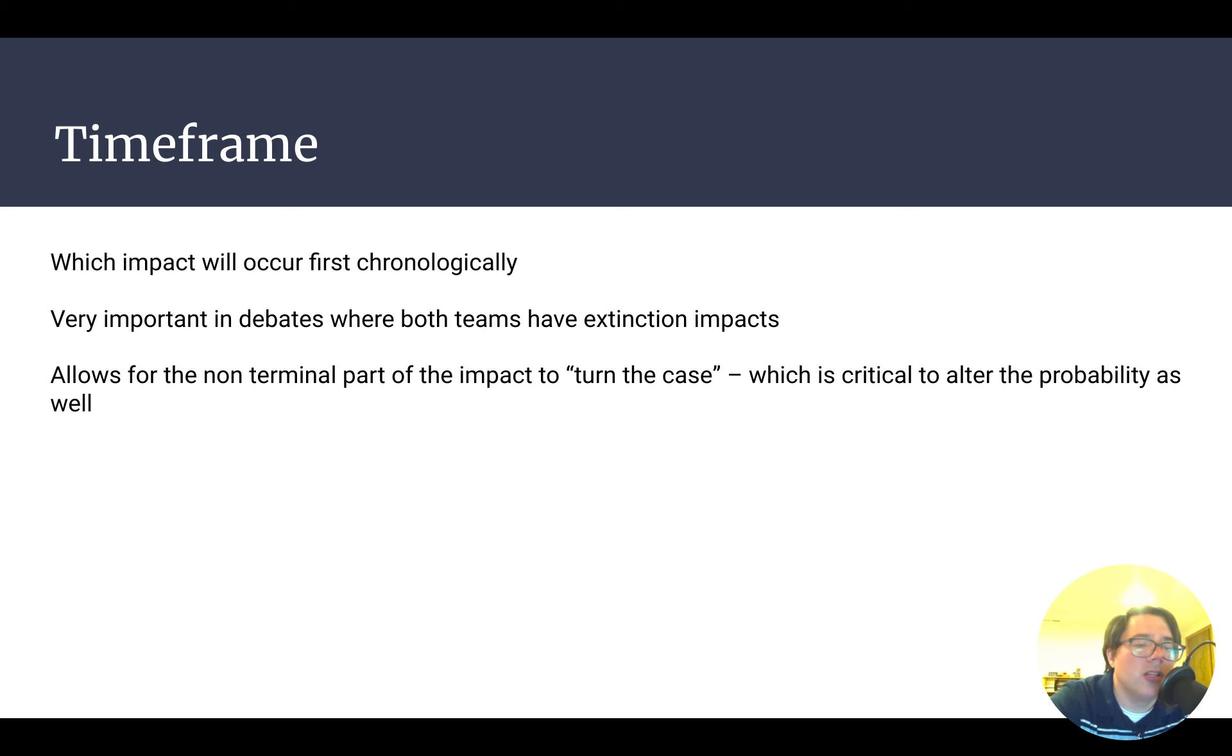Timeframe is the second big argument that occurs inside of impact calculus. Timeframe asks the question, which occurs first chronologically? I believe that it is one of the most important things that goes underutilized in extinction versus extinction debates. If one team is claiming to have an extinction impact based upon climate change, and another team is arguing an extinction-level impact from a U.S.-China war over Taiwan, you would be able to have arguments about why the U.S.-China war would occur before the impacts to climate change would cause extinction. Therefore, if you want to live longer and possibly solve climate change in the interim, you have to vote to prevent the U.S.-China war. Those timeframe arguments become super critical in order to be able to win those debates when it's extinction versus extinction.